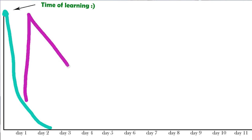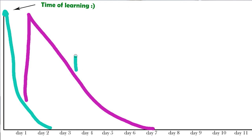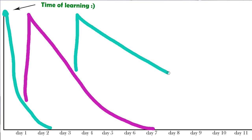And then it might decline in say seven days, so you'd relearn it three days later and it would reset again.